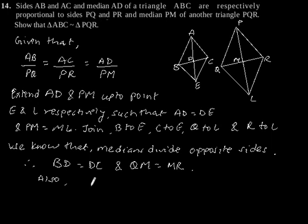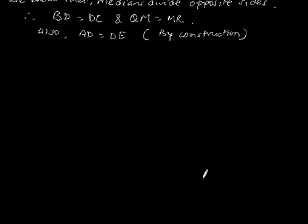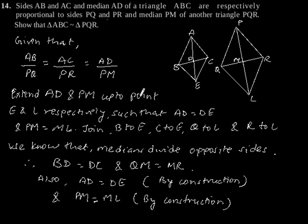Also by construction, AD is equal to DE and PM is equal to ML. In quadrilateral ABEC, the diagonals AE and BC bisect each other at point D. Therefore, quadrilateral ABEC is a parallelogram.